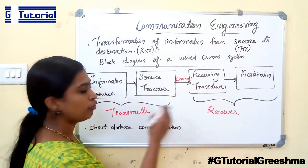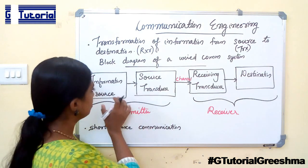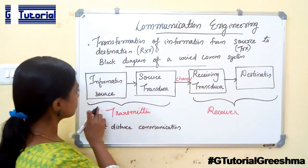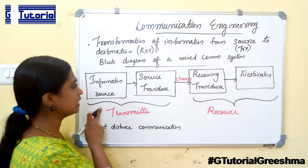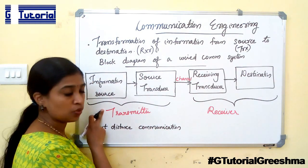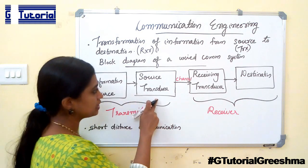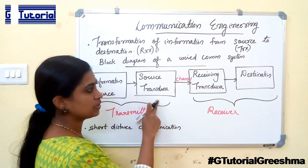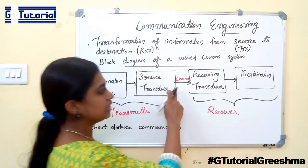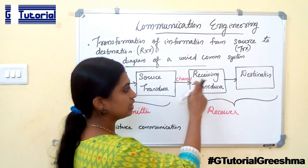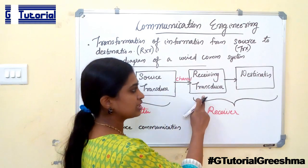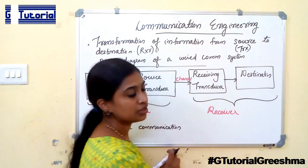The wired communication system involves the following blocks: first is the information source, next is the source transducer, then the channel, then the receiving transducer, and finally the destination.